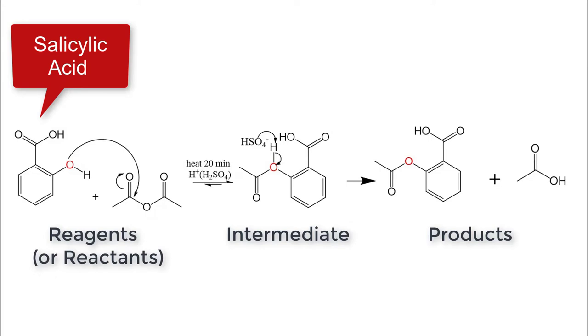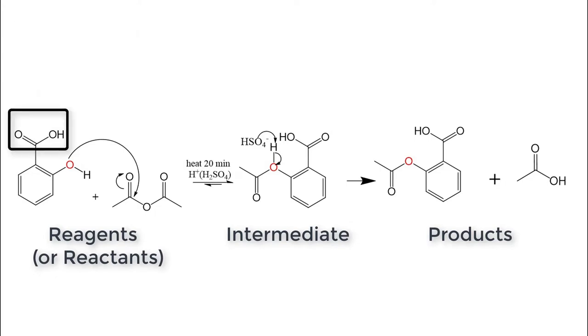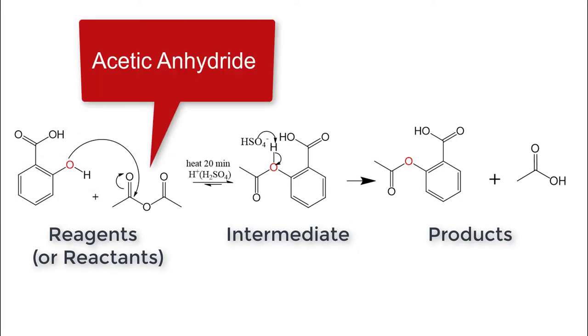For our reactants, salicylic acid has a carboxylic acid group, an alcohol group, and an aromatic ring. The acetic anhydride is an anhydride.